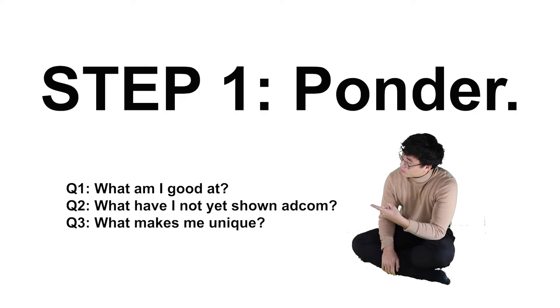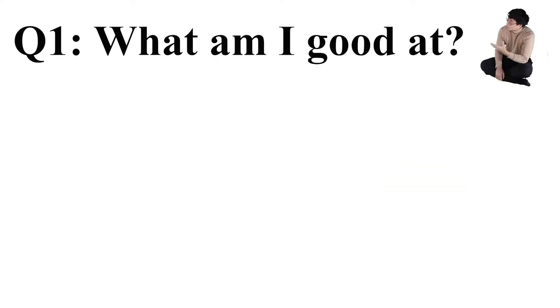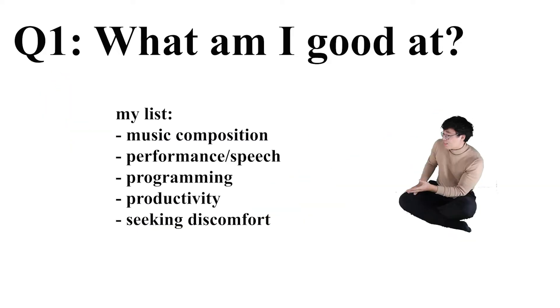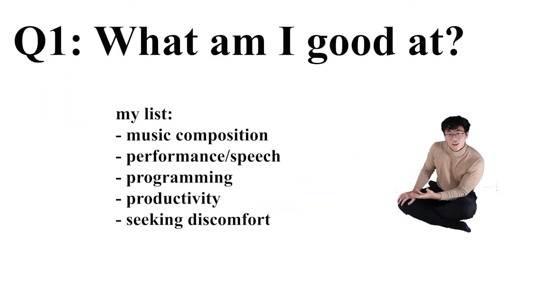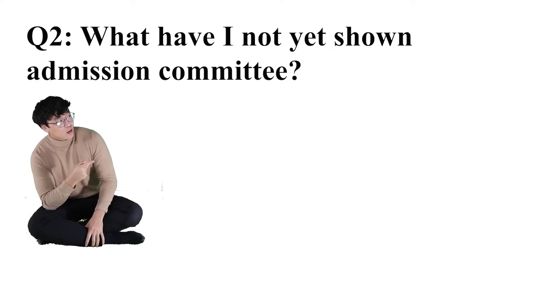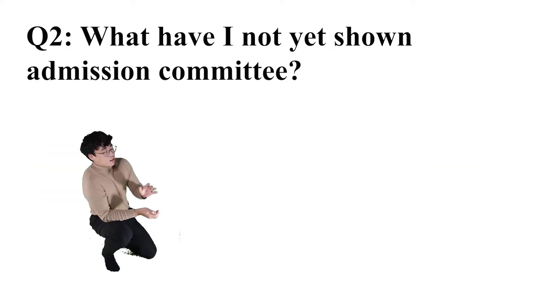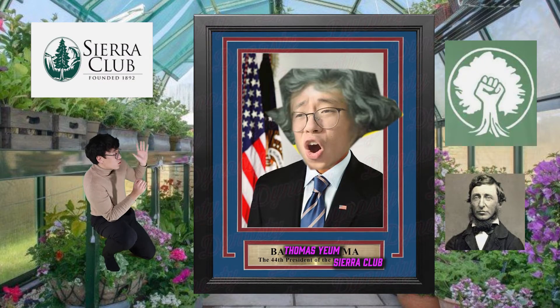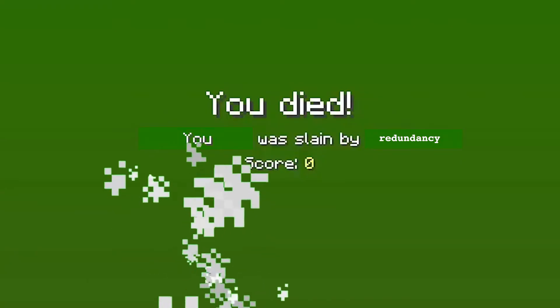Step one: ask yourself these questions. What am I good at? First, list everything — it doesn't have to be interesting and prestigious. This is you; tell them what you've got. Next: what have I not yet shown the admissions committee? If you've already told them about your plaid collection, your environmentalism club, your initiatives, and your essays, you don't have to talk about them. Just move on.